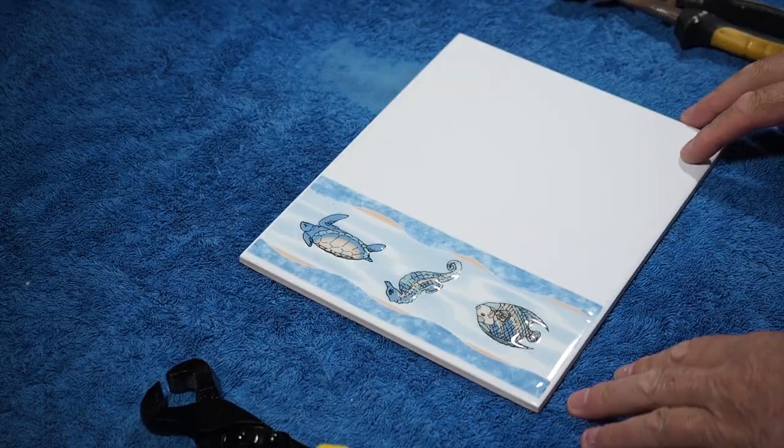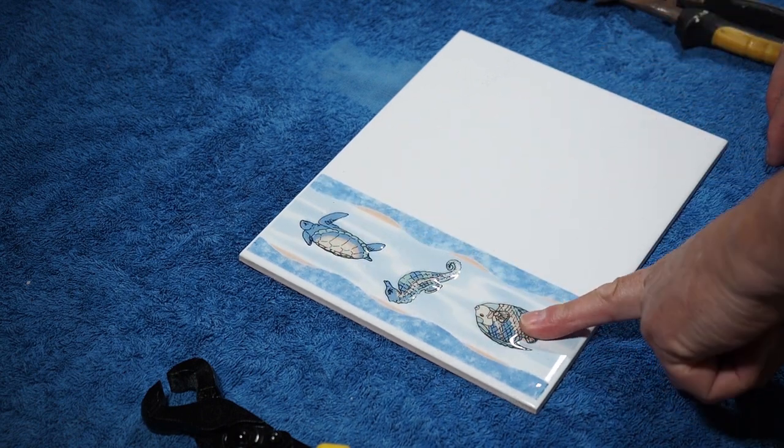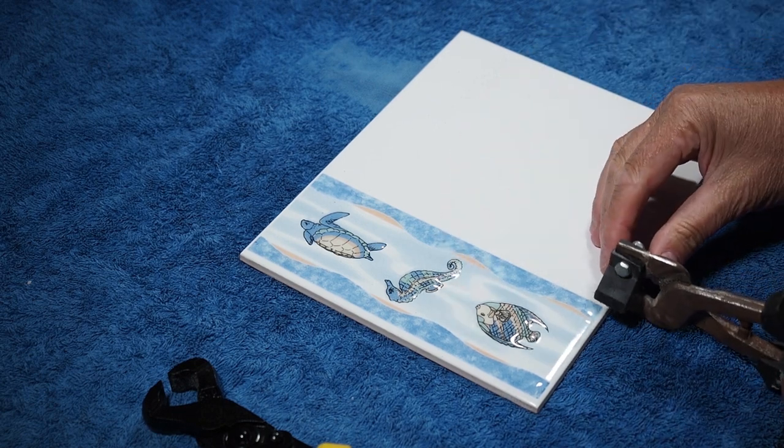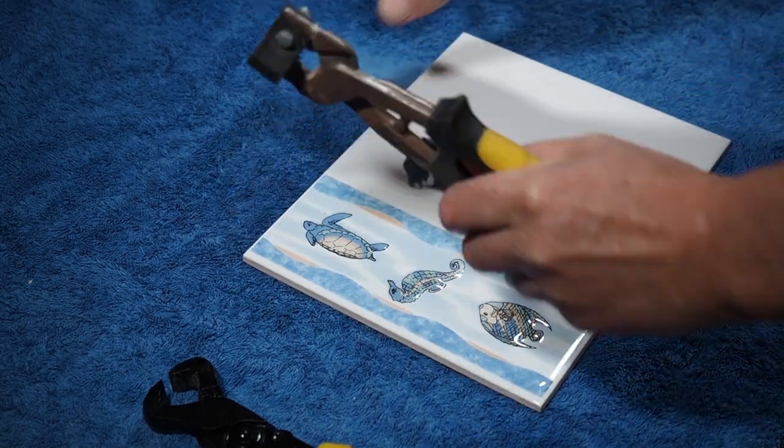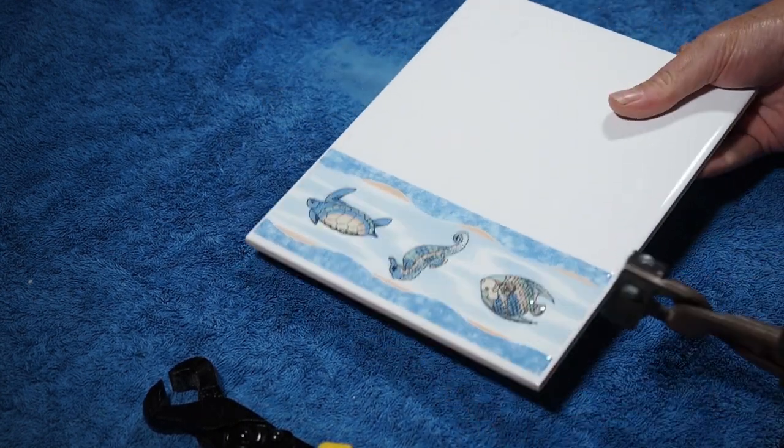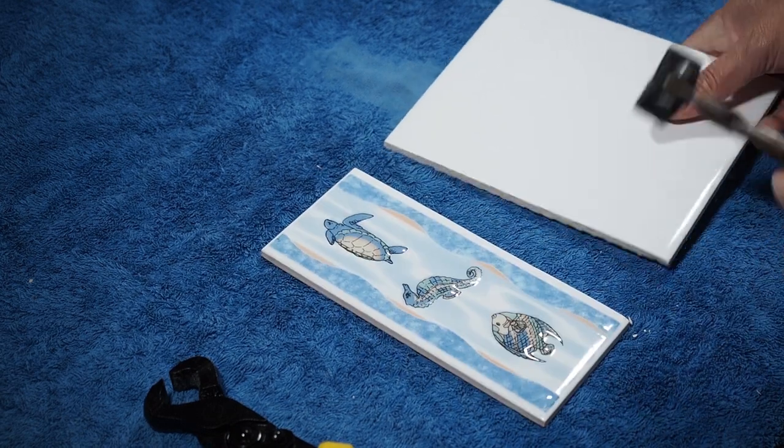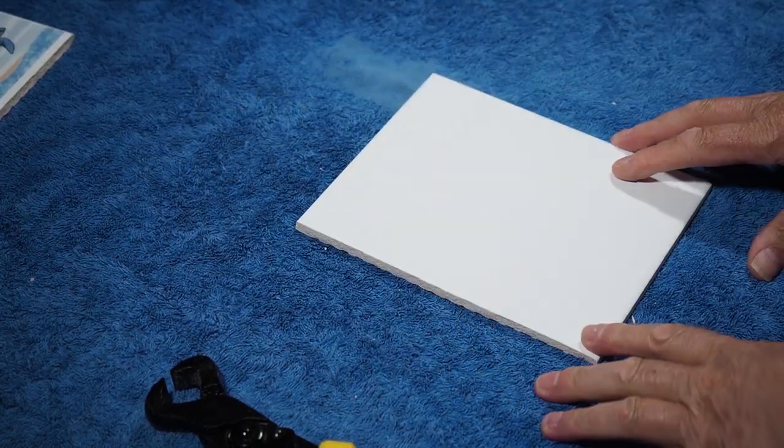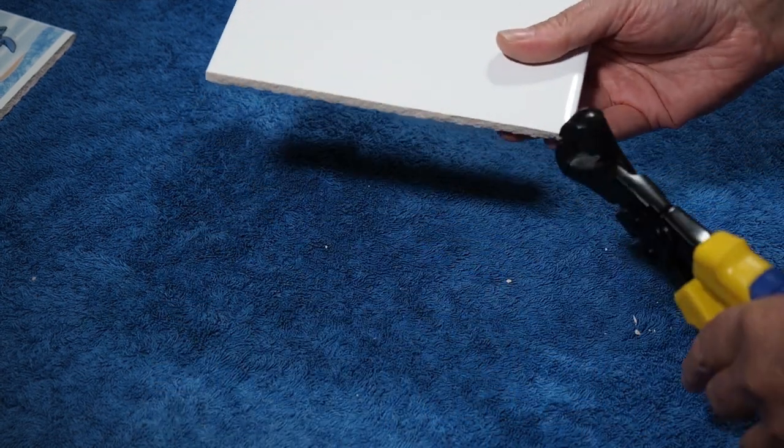The first thing I'm going to do is score a line across here because I want to keep this bit for something else. I'll run that score line straight up there. Love that sound. Now hopefully the magic is going to work. We'll put it on the score line and yes it did. So that's a good start. I can keep that for another mosaic.